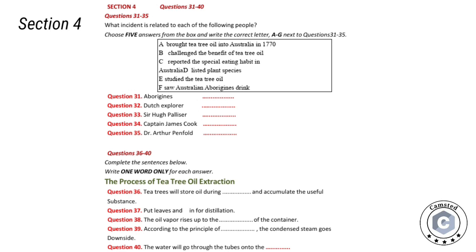Sir Hugh Palliser, an officer of the British Royal Navy who had been to Australia several times during that period, got serious injuries all over due to his experiences in several wars. For more than the last 15 or 16 years of his life he seldom laid down on a bed because of the constant pain in his leg. Then he tried tea tree oil, as it was said that tea tree oil could operate as a very powerful immunostimulant for pre and post surgical care.